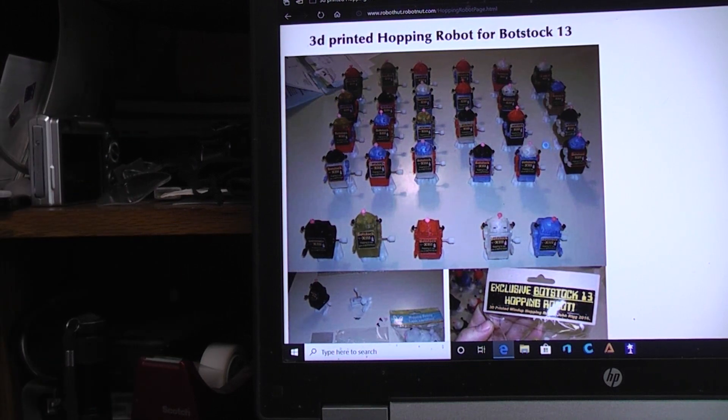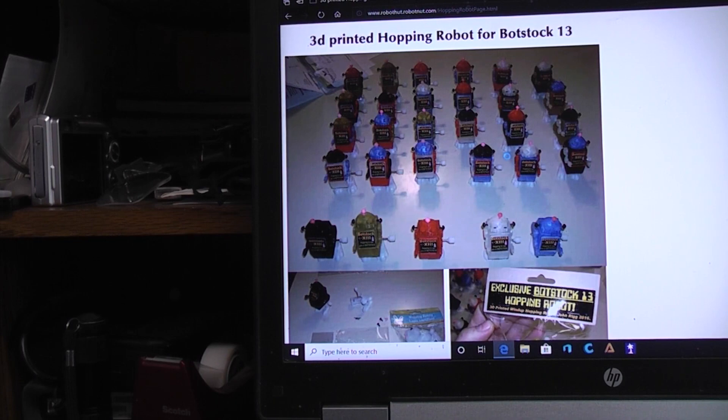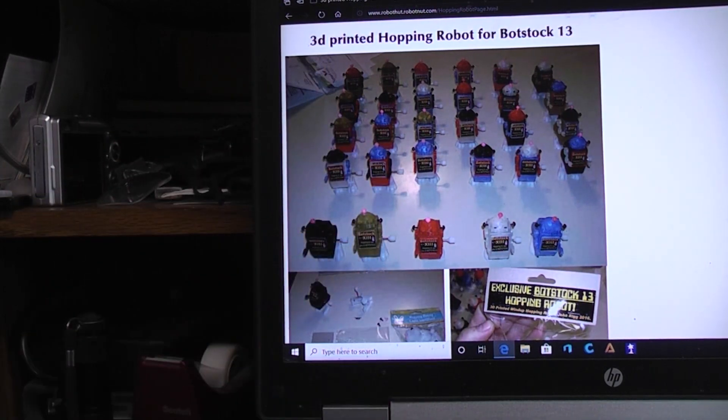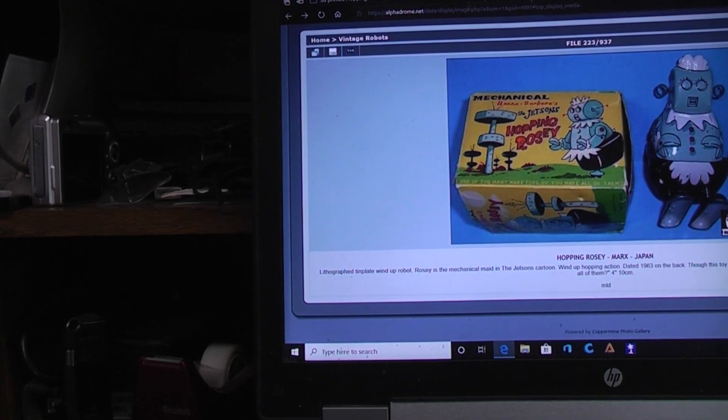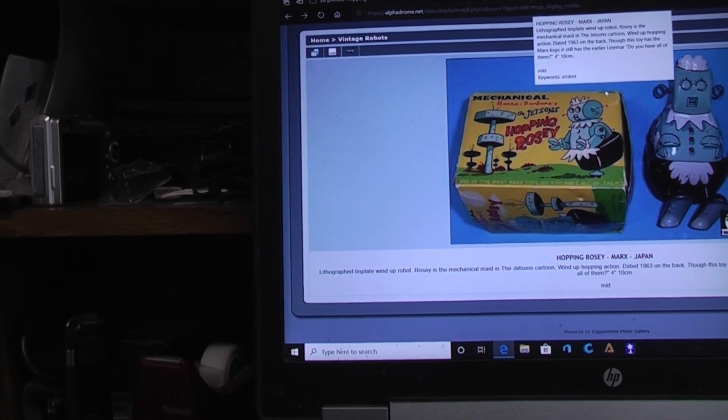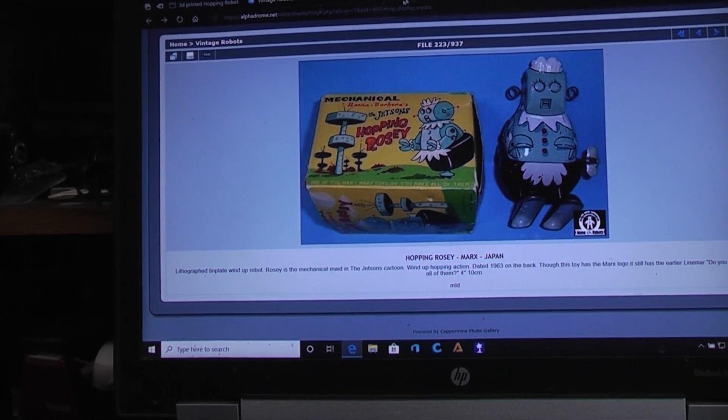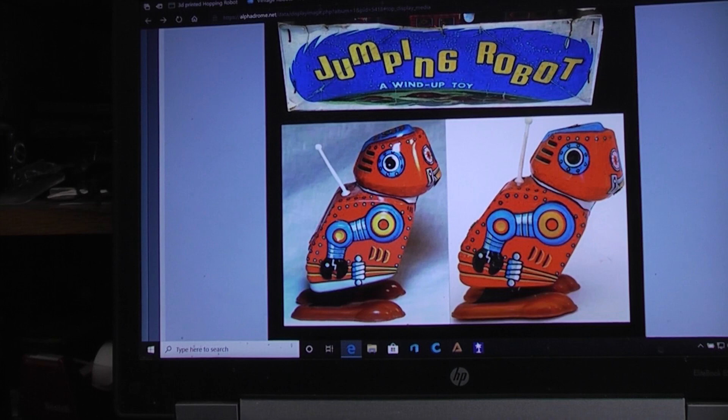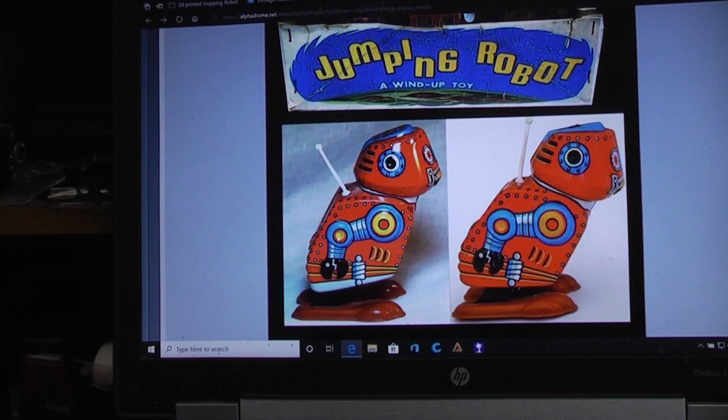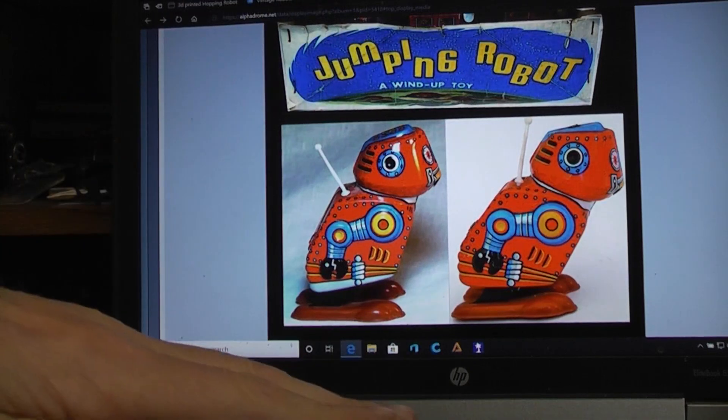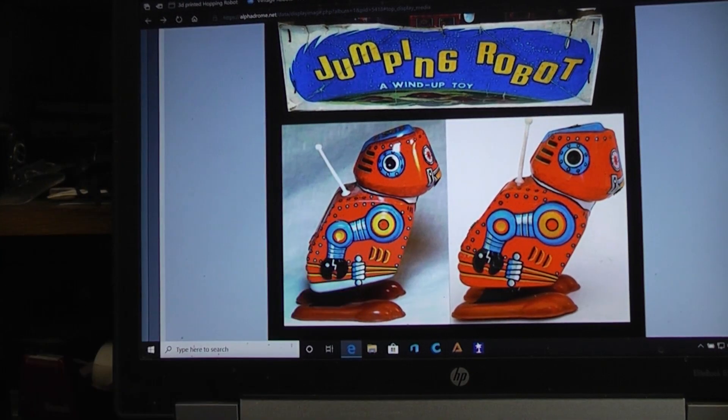I'd completely forgotten about this until this idea came to me based on the vintage robots. For example, Rosie was a hopping robot, one of the more rare ones, and these jumping robots, which were more common. In both these cases, they tip the body forward, and then when the body flies back, that lifts the feet off the ground and gets them jumping.